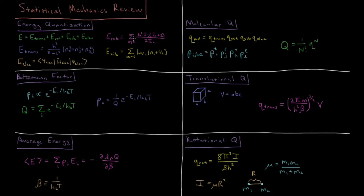The rotational energy is given by quantum numbers in the x, y, and z directions: h-bar squared times some quantum number j times (j+1), divided by 2 times the moment of inertia of the molecule in that given dimension.